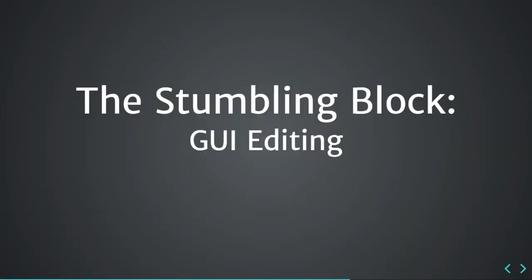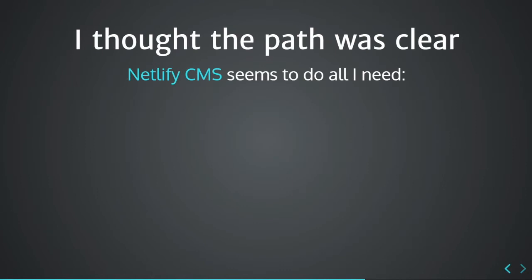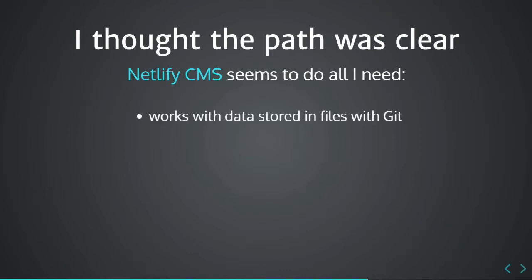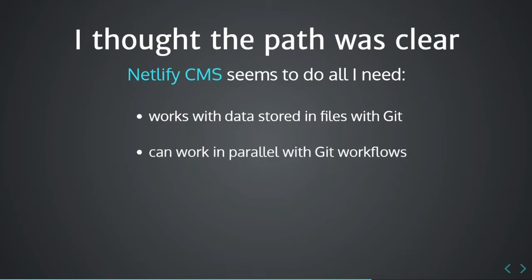We had a few different options there, and felt like I kind of know what I'm doing with those — they're not quite where we want them to be, but it's something we can start with. Where we really had a stumbling block was with the graphical user interface editing of the spec file. Initially I thought that path was pretty clear. We happen to have an open source project called Netlify CMS, and it seems to do everything you would need for this — you just need to hook it up. It works with data stored in files with Git, so you've got your OpenAPI spec file inside a Git repository, and Netlify CMS basically works with files living in Git repositories, in parallel with Git workflows. Developers who don't want to use a UI can make Git commits and pull requests, while others can use the UI — and both work on the same document at the same time.